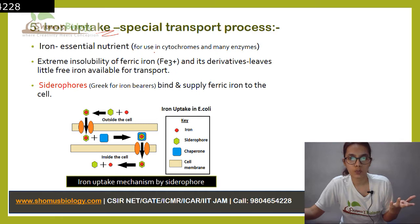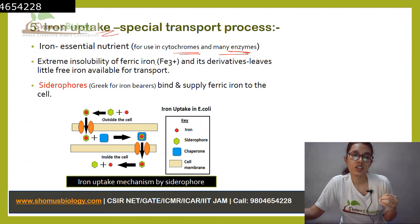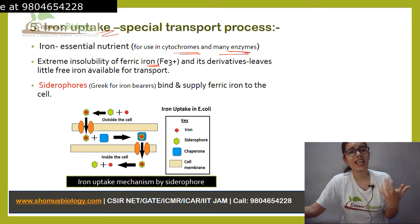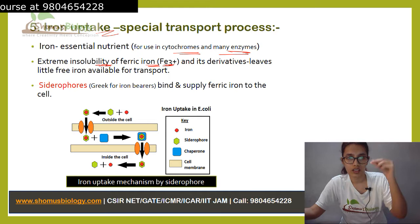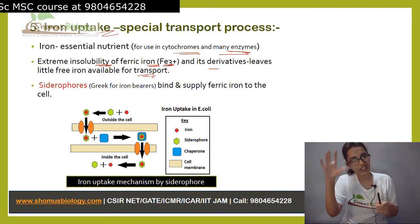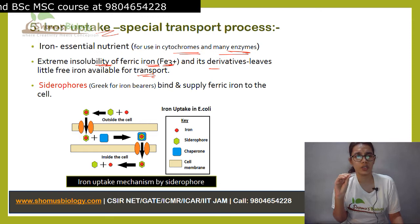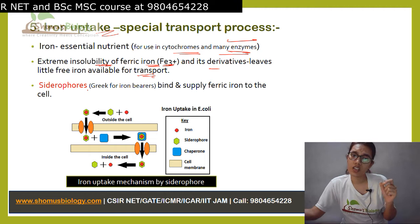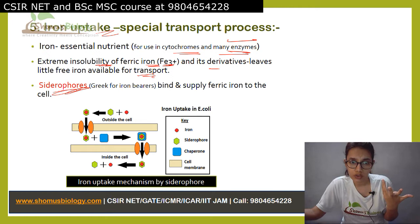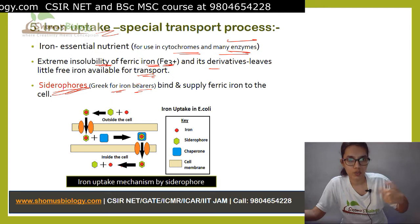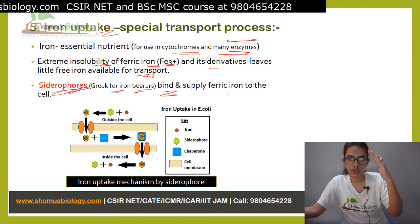Iron can get inside through normal translocation systems, but because ferric ions are extremely insoluble, only a very little amount of free iron is available for transport that way. Bacteria need more iron to continue their enzyme work. So a special carrier called a siderophore — literally an iron bearer — is used. Siderophores bind with iron and supply the ferric iron to the cell.